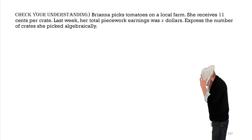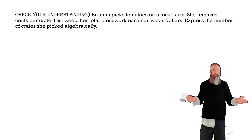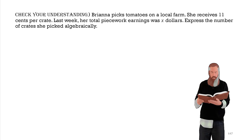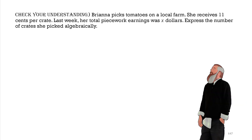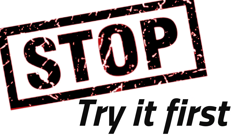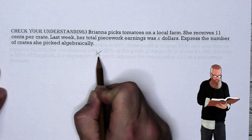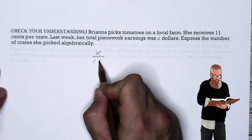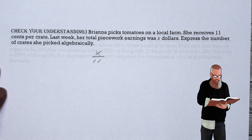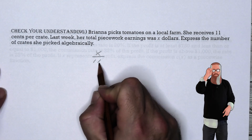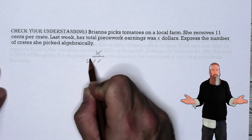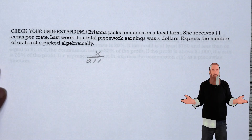Let's check our understanding. Brianna picks tomatoes on a local farm. She receives 11 cents per crate. Last week her total piecework earnings were X dollars. Express the number of crates she picked algebraically. If she earned X dollars at $0.11 per crate, then the number of crates is X divided by 0.11.